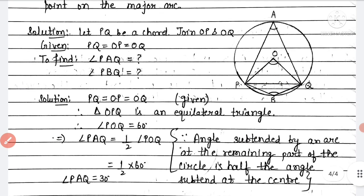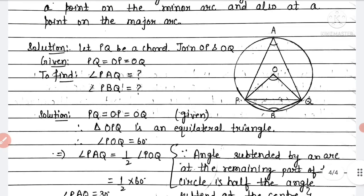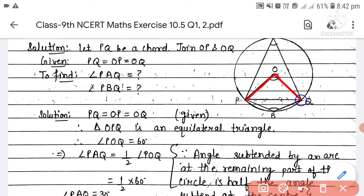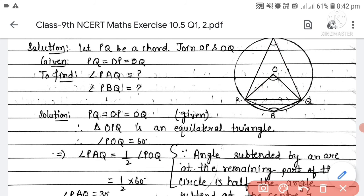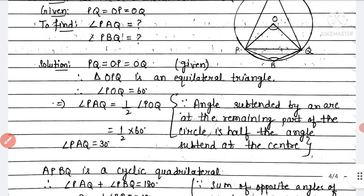Angle PAQ (on major arc, which is the remaining part when arc PQ is the minor arc) = angle POQ / 2 = 60/2 = 30°. Result applied: angle subtended by an arc at any remaining point of the circle is half the angle subtended at the center. So angle PAQ = 30°.